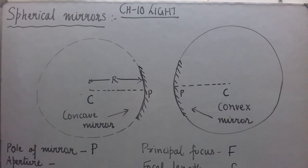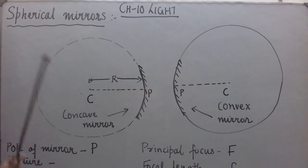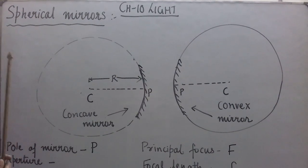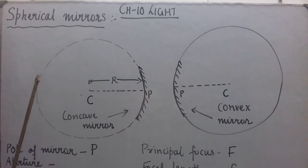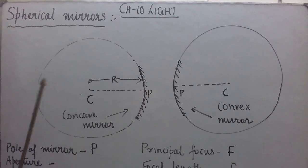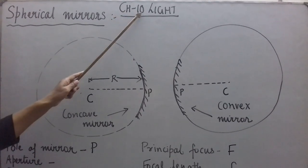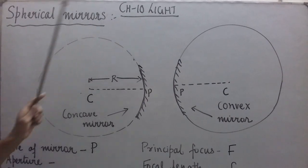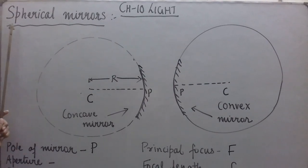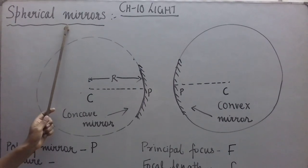Hello students. In the previous video we have started about how image is formed by a plane mirror. Now in this video we are going to continue with chapter 10 light, but we are going to start with spherical mirrors.